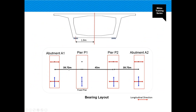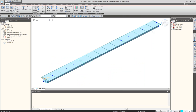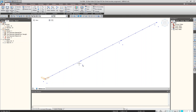Now I will show how to model this configuration for a three-span continuous box girder bridge with spans of 39.75 plus 45 plus 39.75 meters. In this configuration, one bearing is the fixed bearing at the fixed pier, one bearing translates only in the transverse direction, one bearing translates only in the longitudinal direction, and one bearing can translate in all directions. Generally, various kinds of pot PTFE bearings are used for these configurations.